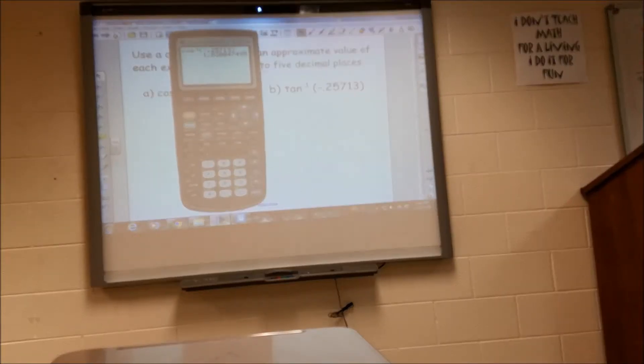So since I got the calculator up, I'm just going to go ahead and do the inverse tangent. It's the same deal. It has to be in radian mode. Inverse tangent is the second in the tangent button. And then negative 0.25713. And that gives me that value there.